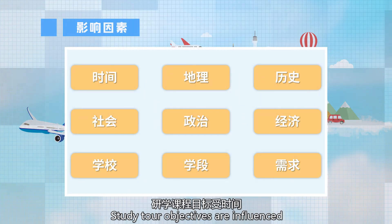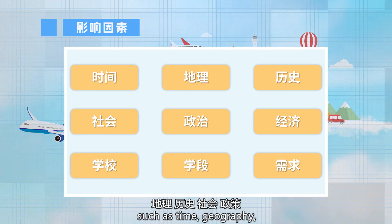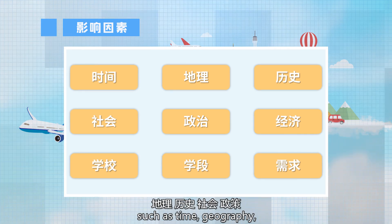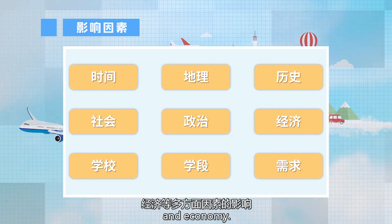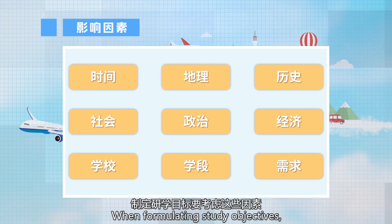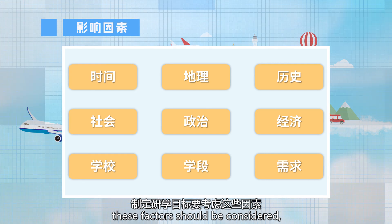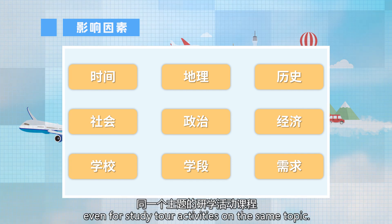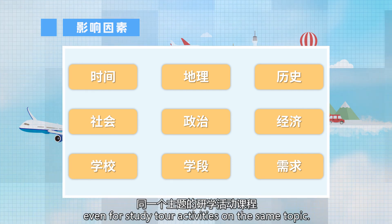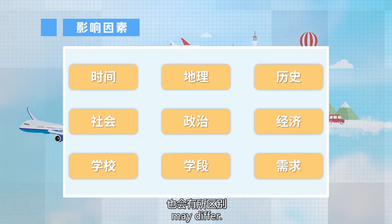Study tool objectives are influenced by various factors, such as time, geography, history, society, policy, and economy. When formulating study objectives, these factors should be considered. For different schools and academic stages with different needs, even for study tool activities on the same topic, their study objectives may differ.